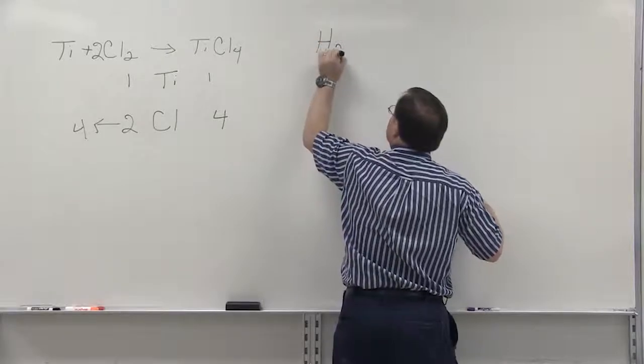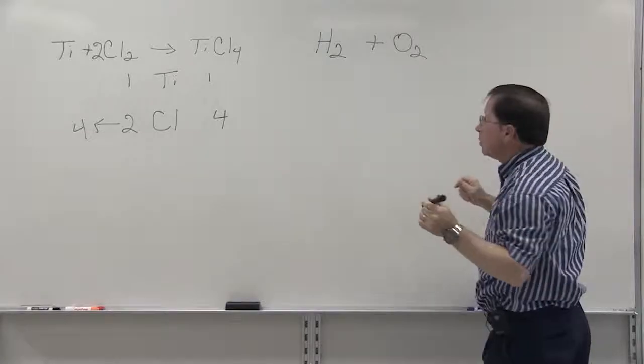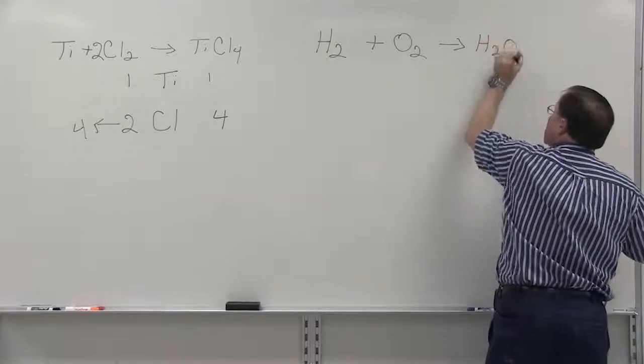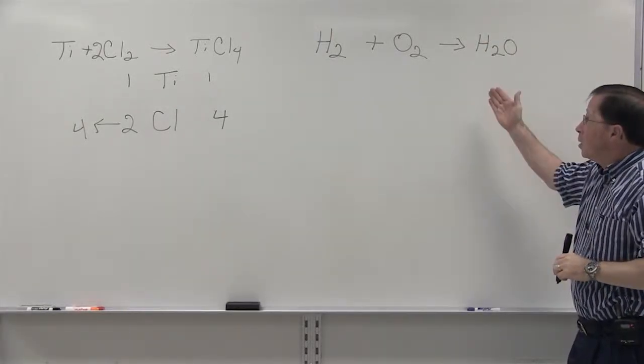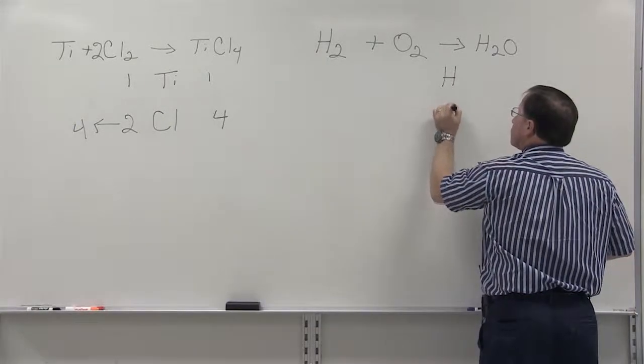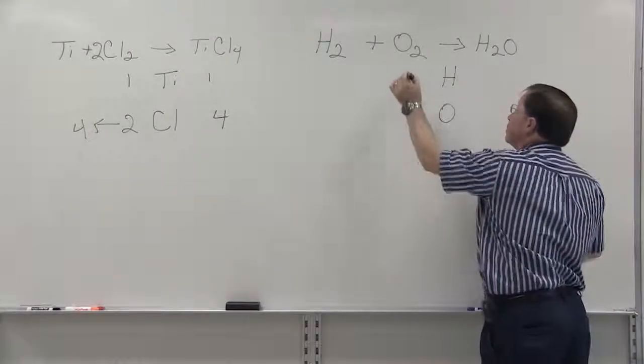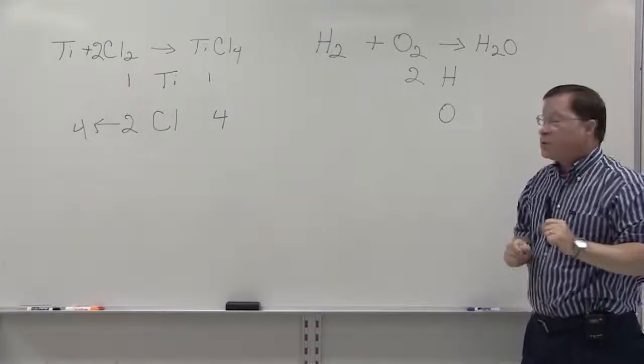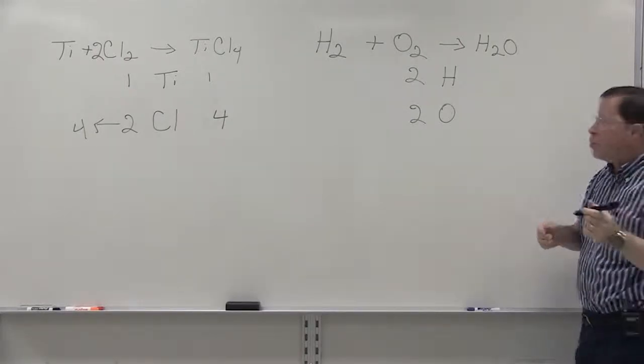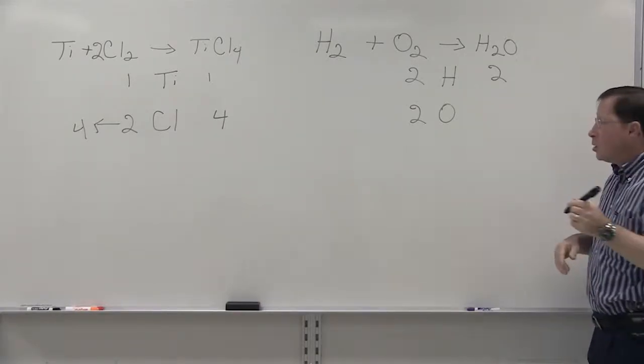If we have hydrogen plus oxygen giving us water, let's balance this equation. We have two hydrogens on the left-hand side. We have two oxygens on the left-hand side. On the right-hand side, we have two hydrogens. On the right-hand side, we have one oxygen.